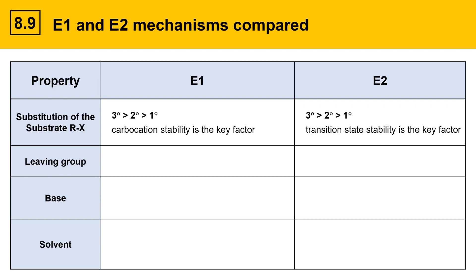The next factor is leaving group. A good leaving group is required for E1 because it leaves in the first step, the rate-determining step. For E2, that is also true, that the leaving group leaves in the rate-determining step, so a good leaving group is needed.